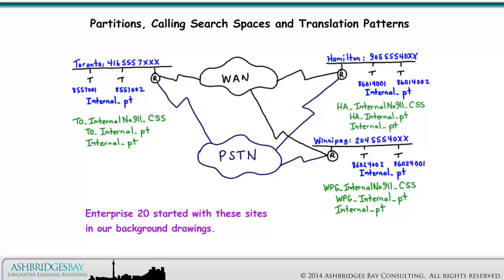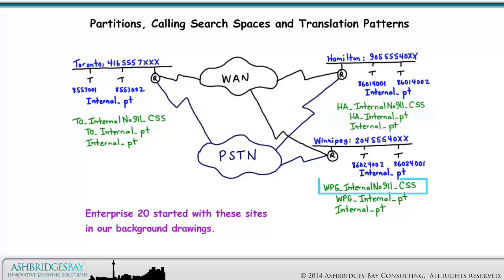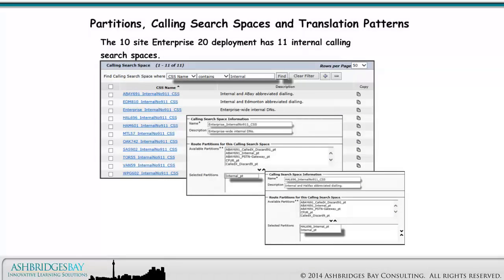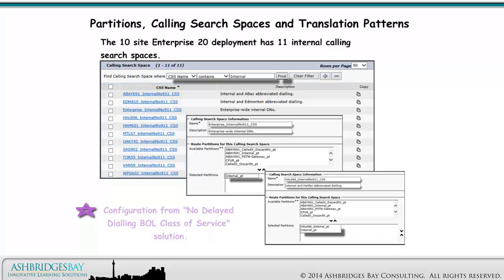Enterprise 20 started with these sites in our background drawings. At the Toronto site we had the TO Internal No 911 CSS, at the Hamilton site the HA Internal No 911 CSS, and at the Winnipeg site the WPG Internal No 911 CSS. The 10-Site Enterprise 20 deployment has 11 internal calling search spaces. Here is the configuration from the No Delayed Dialing Blocking Online's Class of Service solution.